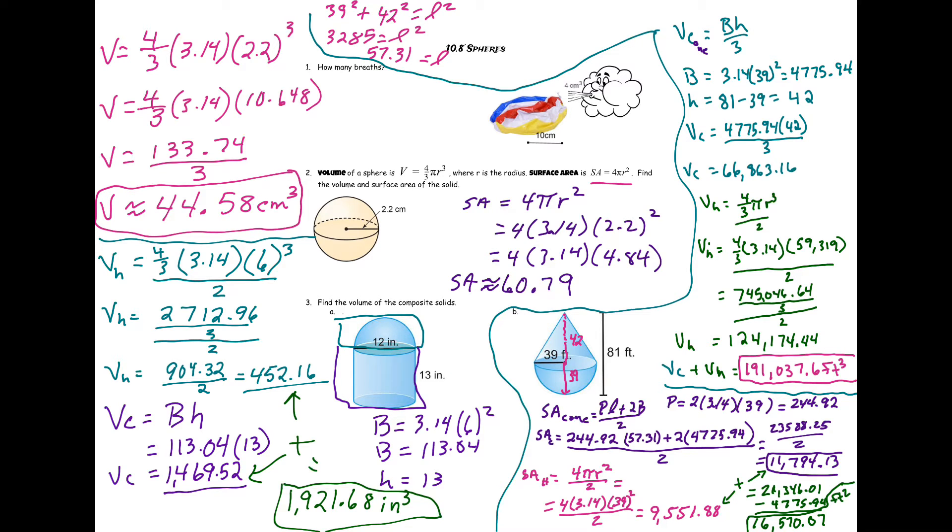And then last thing to find the volume of this together, we just add the cone plus the hemisphere. So cone plus hemisphere is going to give us a final answer of 191,037.6 feet cubed.